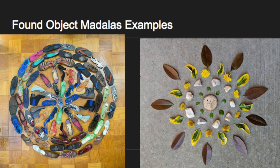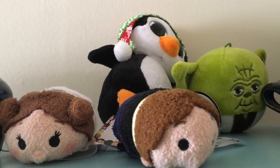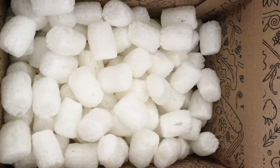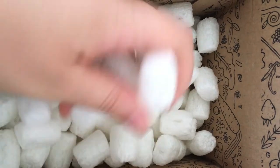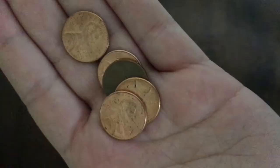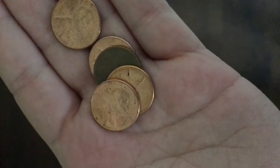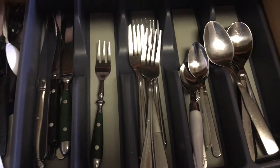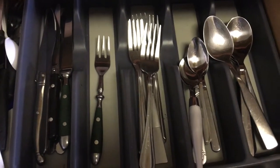If you are making your mandala with found objects, you need to go around and collect your found objects. Small toys make good found objects. Things like twist ties or rubber bands work well. I found some pennies and hairpins. You can ask if you can use silverware and then wash it before you put it away.